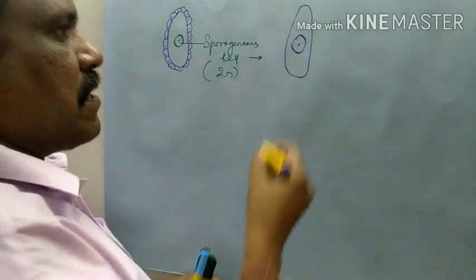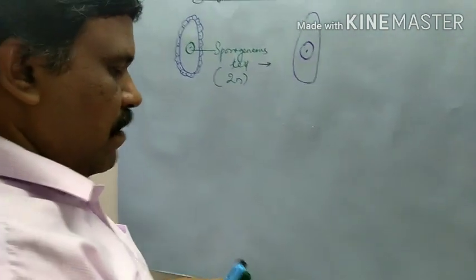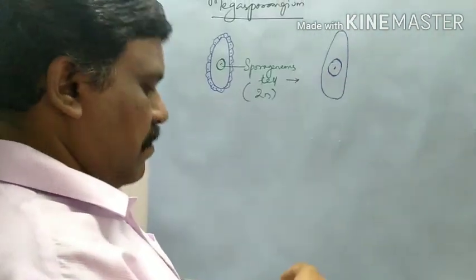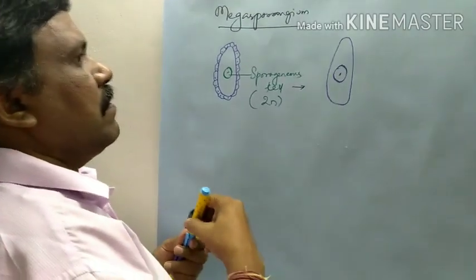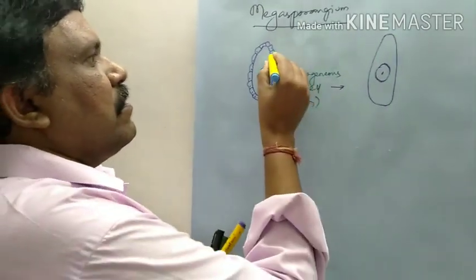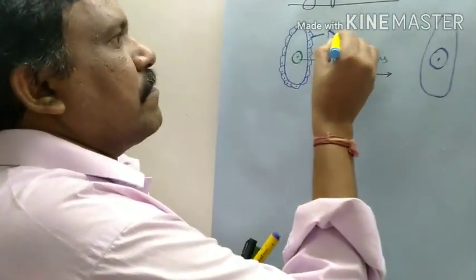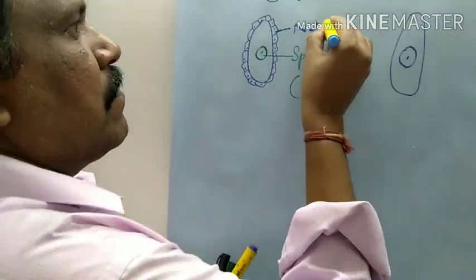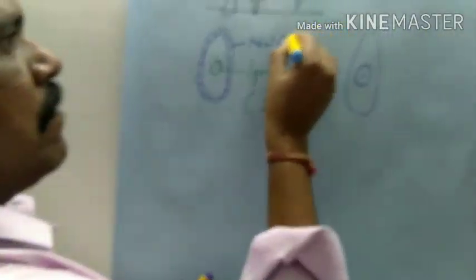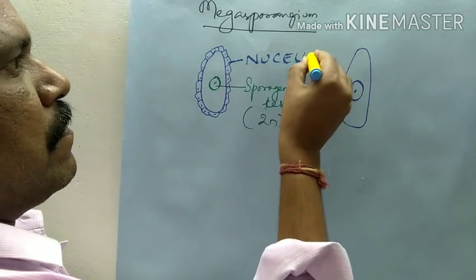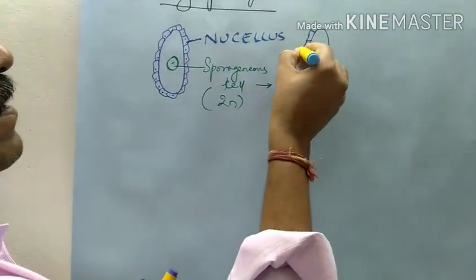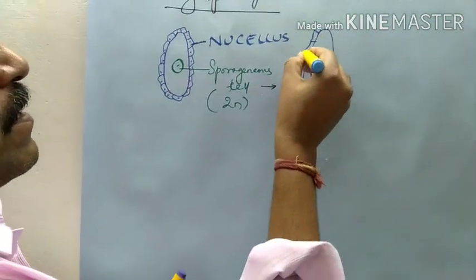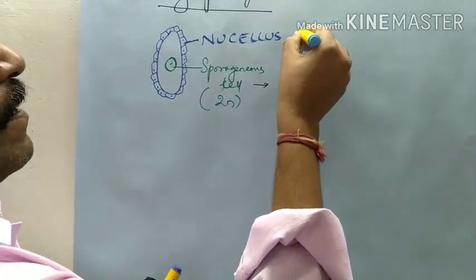You have a Megaspore mother cell here. And what is this tissue? This is called nucellus — the nucellus cells are surrounding that.